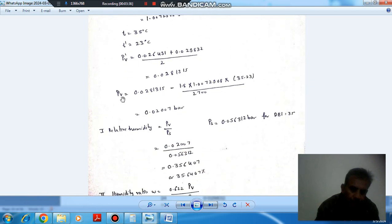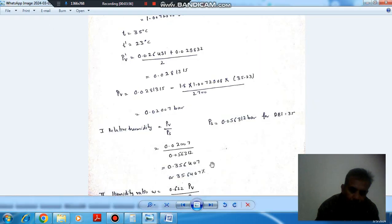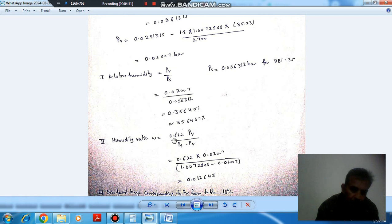Now relative humidity, we know that P_V by P_S. P_V we have calculated corresponding to DBT. This is the partial pressure and P_S is saturation pressure corresponding to DBT. It will be 0.027 divided by 0.056312. It will be 0.48 or 48 percent, approximately.